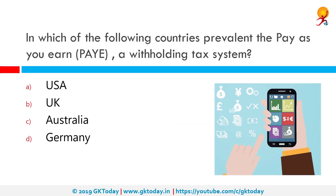In which of the following countries is the Pay As You Earn system — a withholding tax system — prevalent? This is prevalent in the UK. A Pay As You Earn tax is a withholding tax on income payments to employees. Amounts withheld are treated as advance payments of income tax due and are refundable to the extent they exceed taxes determined on tax returns.